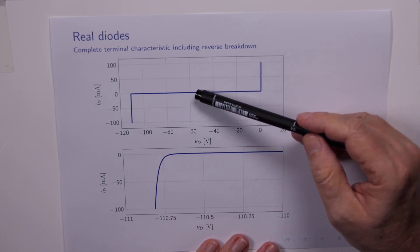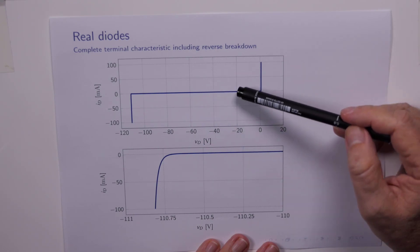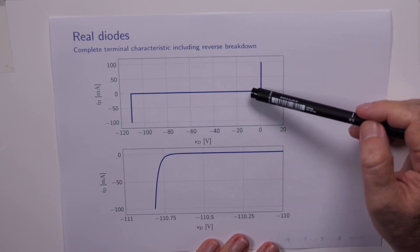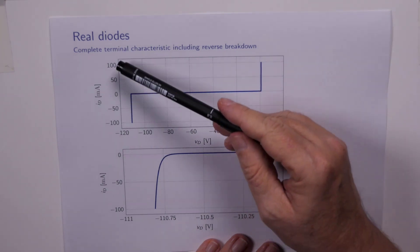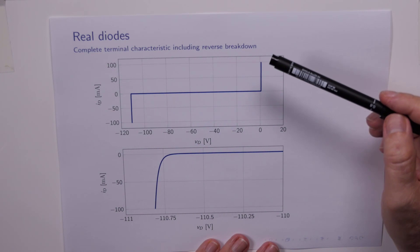In the reverse direction, when we are reverse biasing the diode, that reverse saturation current of 1 nanoamp is basically invisible on this scale of plus or minus 100 milliamps.